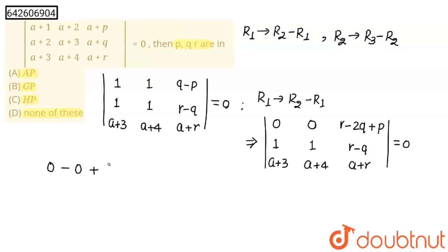Plus, this will become r minus 2q plus p times a+4 into 1, a+4, minus a+3 into 1, a+3. So a+4 minus a+3, this will become 1, and this equals to 0.